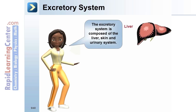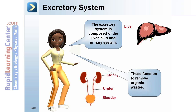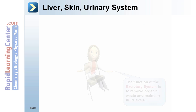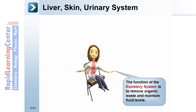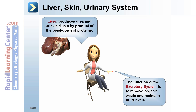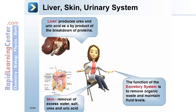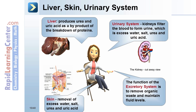Excretory system: composed of the liver, skin, and urinary system. These function to remove organic waste and maintain fluid levels. The liver produces urea and uric acid as byproducts of protein breakdown. The skin removes excess water, salt, urea, and uric acid. The kidneys filter the blood to form urine, which consists of excess water, salt, urea, and uric acid.